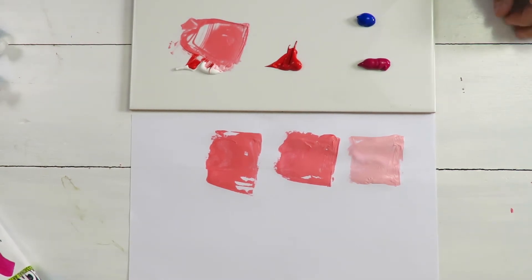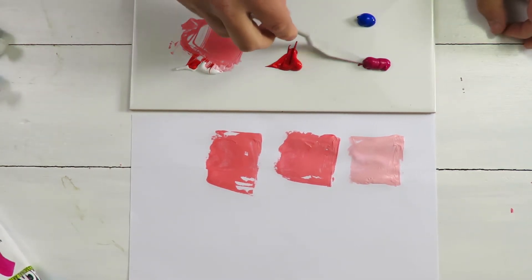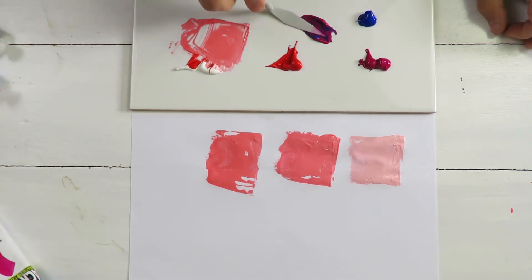Now let's make the purple. We start off with the magenta here, and then we just put it here and add a bit of blue and we have a very dark purple.